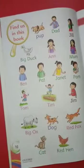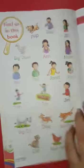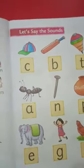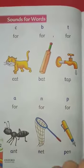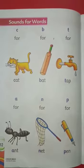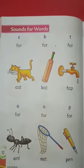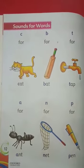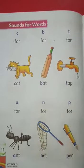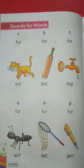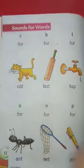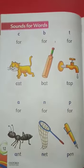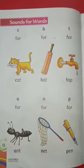Sounds for words. Last time we read this chapter — the sounds. And now we are going to make together the sound of letters and make a word. So today we are going to read three-letter words. We are going to join three letters together and then make a word.